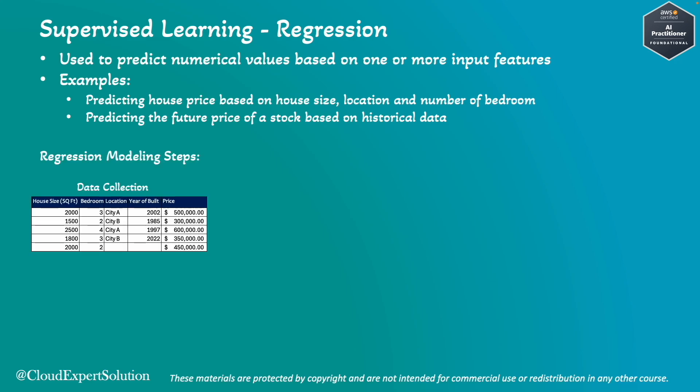Let's review the regression modeling steps. The first step is data collection, where we gather historical data with input features and corresponding output values. In this example, we have a collection of house size, bedroom count, location, year of build, and the corresponding price for each house. These will be used as the input dataset for our model.